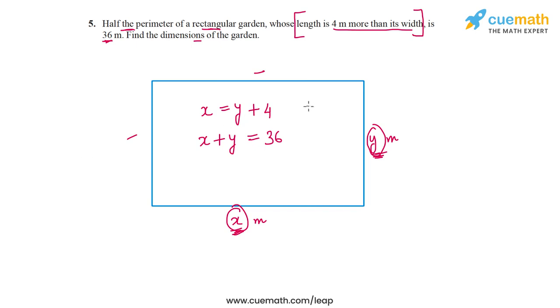The pair of linear equations we get is x = y + 4 and x + y = 36. Now let's graph the two lines corresponding to these two equations and find the solution as their point of intersection.